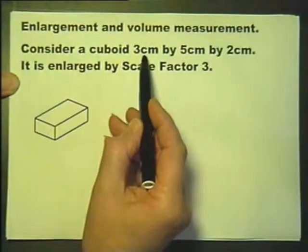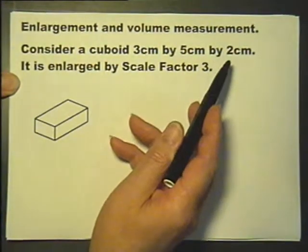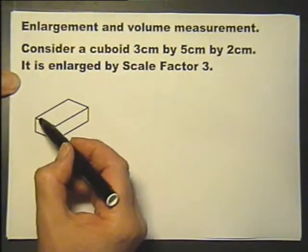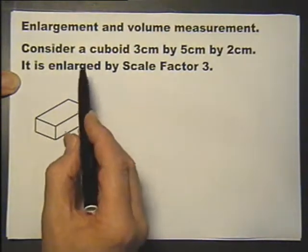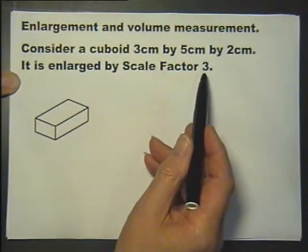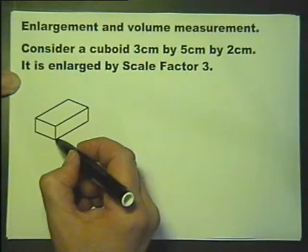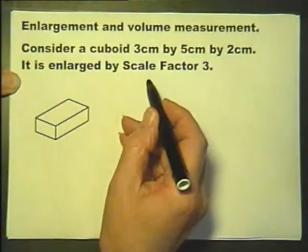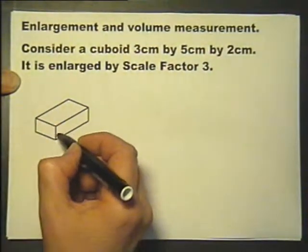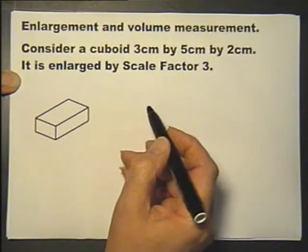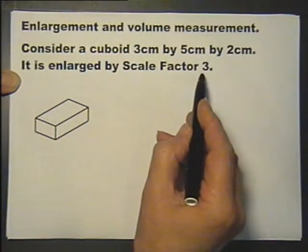Consider a cuboid 3cm by 5cm by 2cm. It's enlarged by scale factor 3, that means it's going to be 3 times longer, 3 times wider, and 3 times higher because all the linear measurements are going to be multiplied by 3.